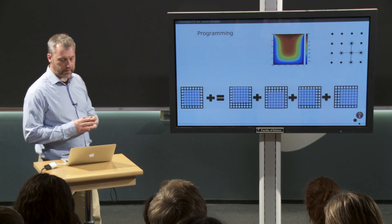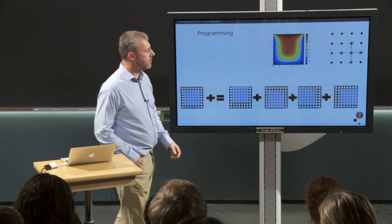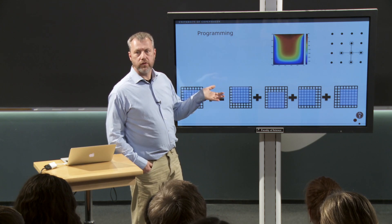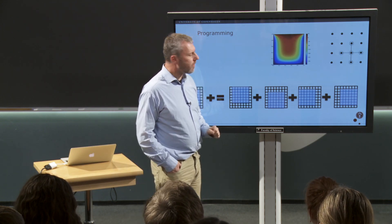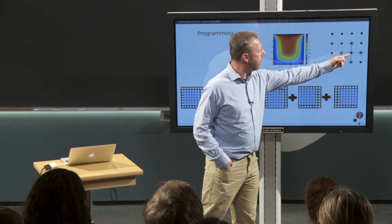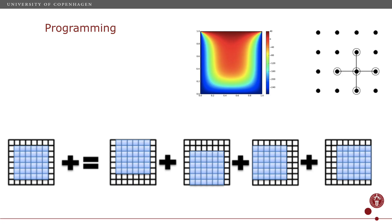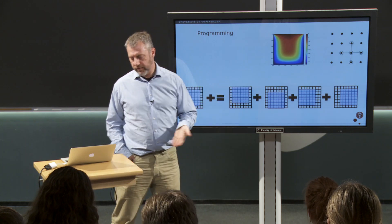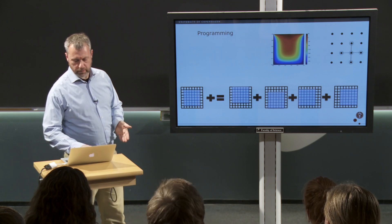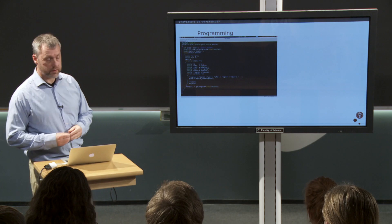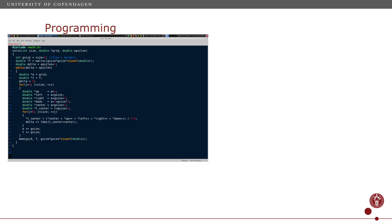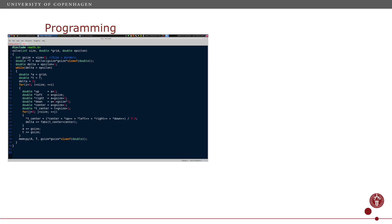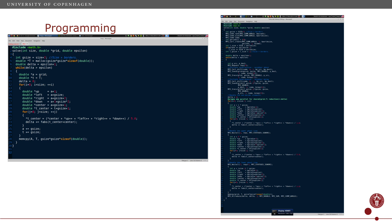As a simple example, take the heat equation: we take a piece of metal, cool it on three sides, heat it on one side, and figure out the temperature gradient throughout the plate. Physically it's a simple calculation — every point becomes the average temperature of itself and its four neighbors. If you write that in C, which is what most physicists would use, it takes quite a few lines for something very simple, and this program only runs on one CPU. If you need it to run on 10,000 CPUs, it becomes far more complex — we can't even read it on the screen.